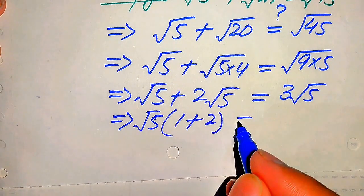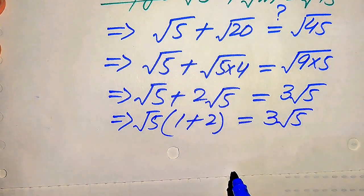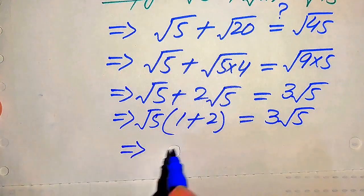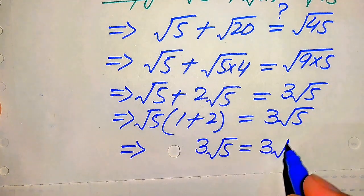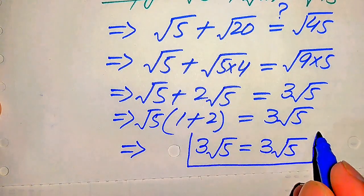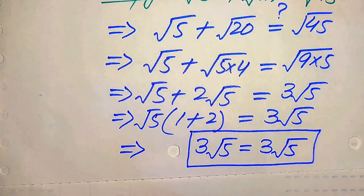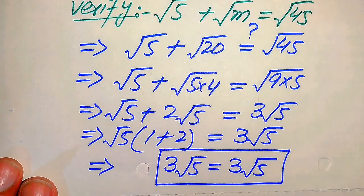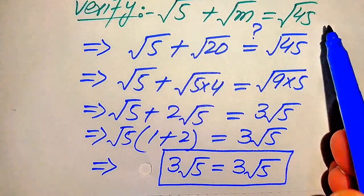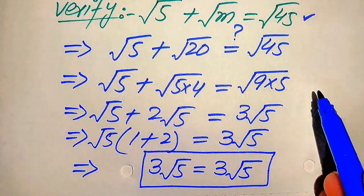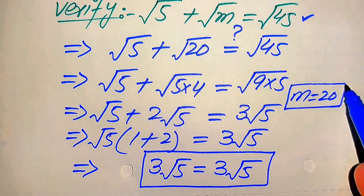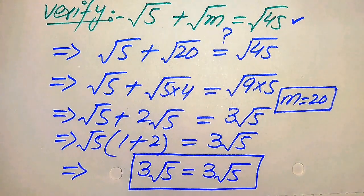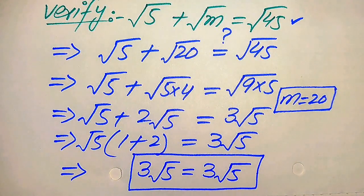Taking √5 as the common term on the left, we get (1 + 2)√5 equals 3√5, which gives 3√5 equals 3√5. This confirms that m = 20 satisfies the given equation. Therefore m = 20 is the only solution of the given equation. Thank you so much for watching this video — please subscribe to my channel for more exciting videos.